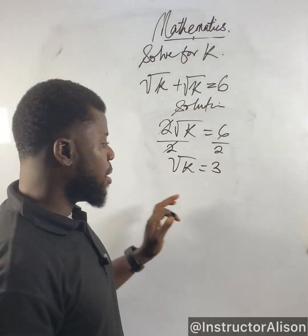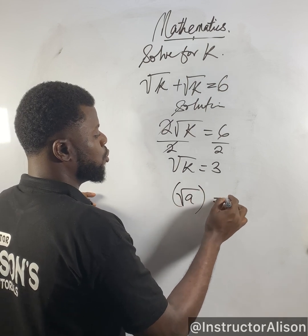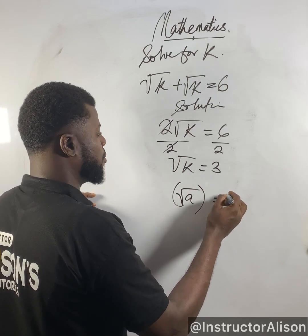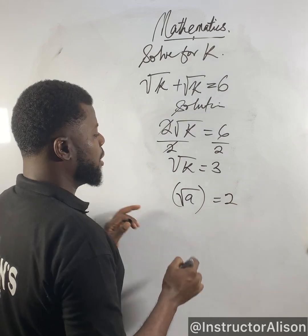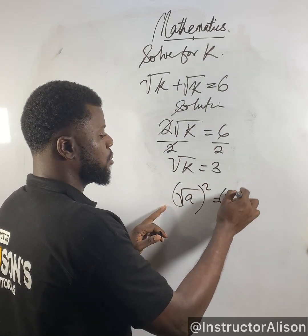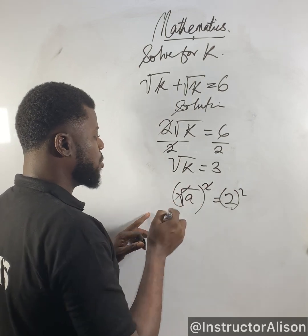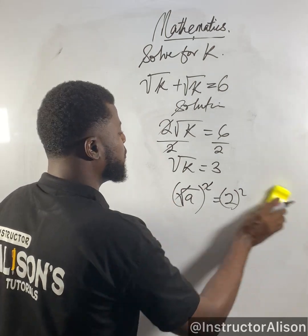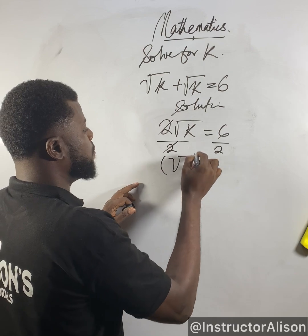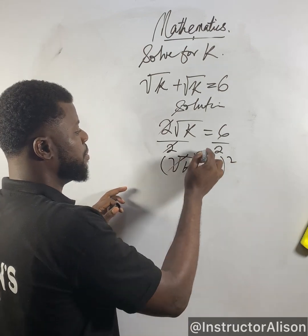Now whenever you have the square root of a number — say root a equals some number like 2 — and you want to eliminate this square root, you want to use squaring on both sides of the equation. Because squaring and square root cancel out. So in order for me to get k, I will have to take the square of both sides of this equation, and then this will eliminate the root.